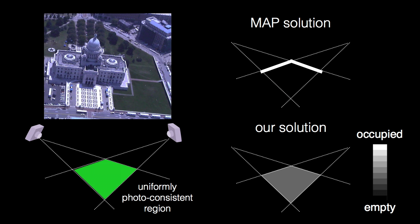In such textureless regions, the maximum a posteriori solution consistently yields reconstructions which are biased towards the camera viewpoints. In contrast, our algorithm assigns a uniformly low probability of occupancy to this region, therefore exposing the reconstruction ambiguity.